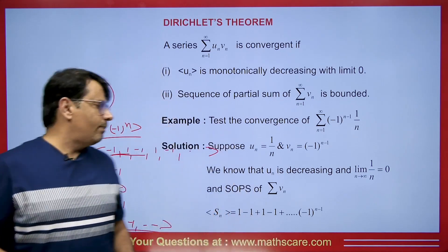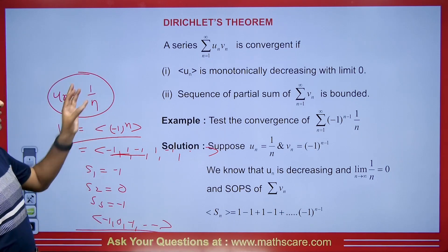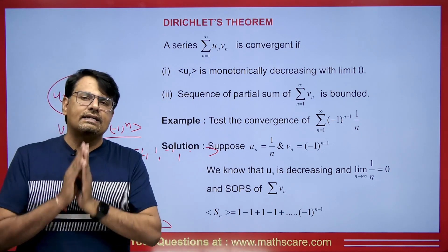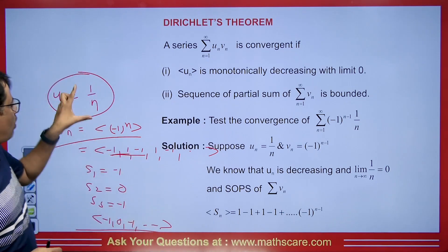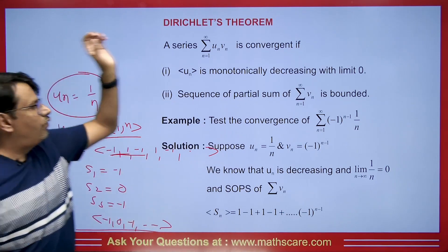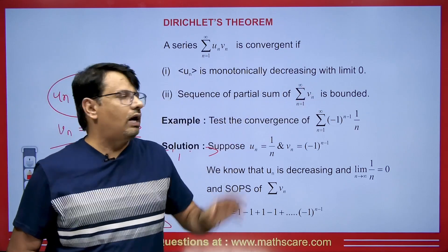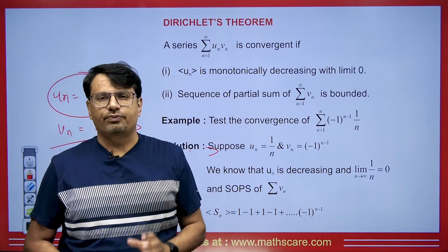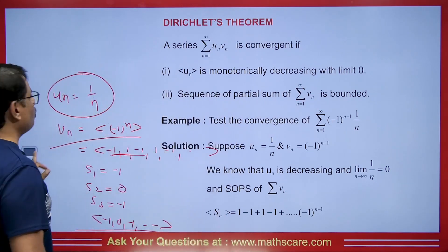It means vn is bounded, and un is monotonically decreasing and tending to 0. This implies that the product series will be convergent by the Dirichlet theorem. Now we will discuss Abel's theorem.